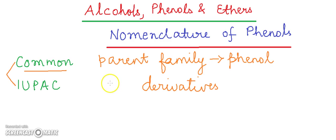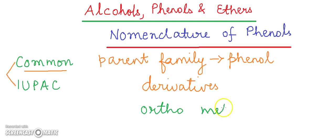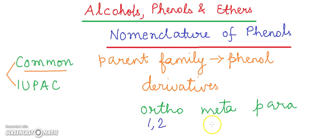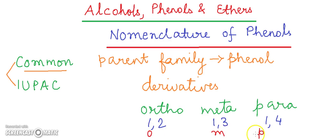The position of the substituents is indicated by the prefixes ortho, meta, and para. The ortho prefix is for position 1,2; the meta prefix is for position 1,3; and the para prefix is for position 1,4. The ortho, meta, and para positions are indicated by O, M, and P respectively.